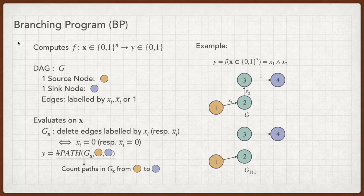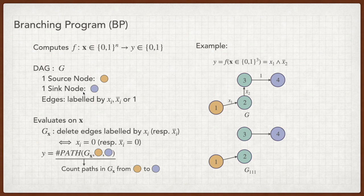Let me introduce the computational model used in the candidate IO which are branching program and affine determinant program. Both of them can compute some function F with n-bit input and 1-bit output. A BP is a DAG with one source node and one sync node. The edges of the DAG are labeled by xi, not xi, or 1.